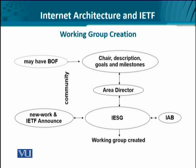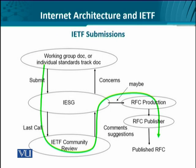After the IESG approves the viability and purposefulness of some activity, a formal working group is created. Meanwhile, the Internet Architecture Board is also taken into confidence. The submission process, which started with the creation of the working group, now begins with the first Internet Draft — a document containing the first initial thoughts of these technologists, documented and submitted to the IETF community review through the formal process of going through the IESG.